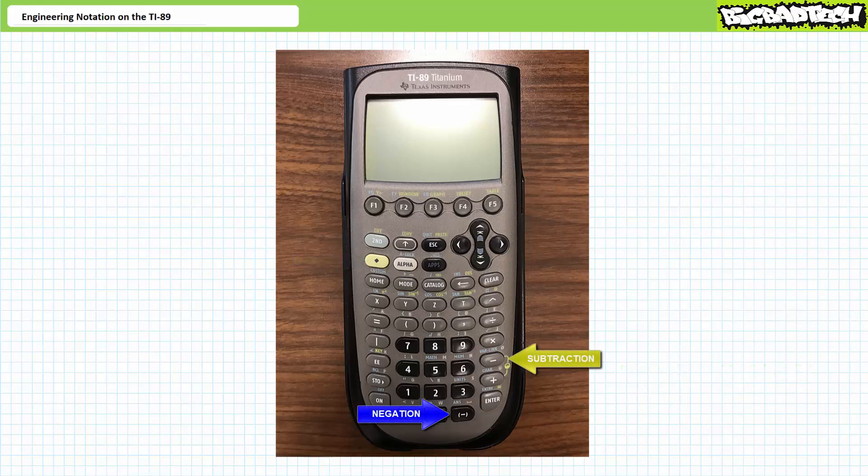I should also point out that the negation sign key at the bottom is different than the subtraction operation key. To negate a number, press the negative sign and the number of interest. We'll examine calculator operations beyond engineering format in later lectures.